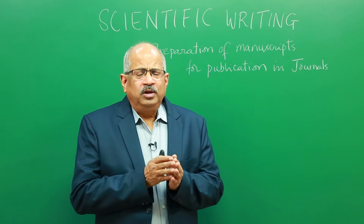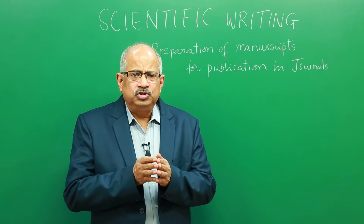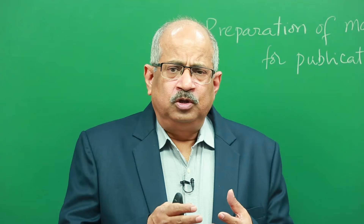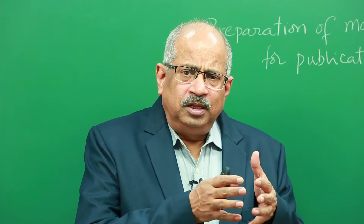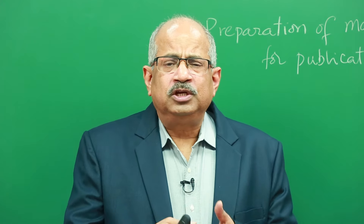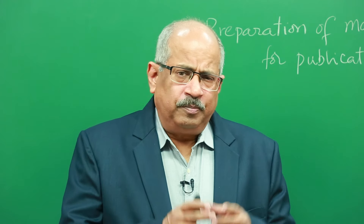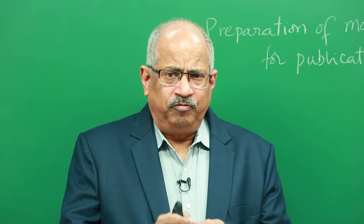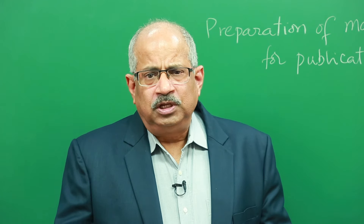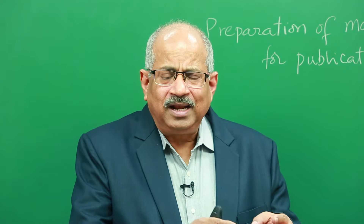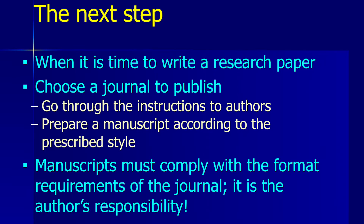The choice of journal is important because each journal has a specific style in which they expect authors to write their papers. Whenever you choose a journal, look at the journal's instructions to authors, which clearly describes how a manuscript should be prepared for consideration for publication in that journal. It is absolutely essential that scientists wishing to publish follow the instructions to authors and prepare the manuscript exactly as prescribed. Manuscripts not in compliance with the journal's style, format, and instructions can get rejected.